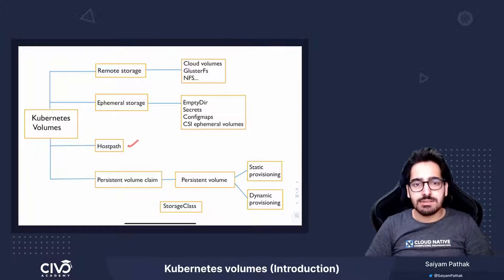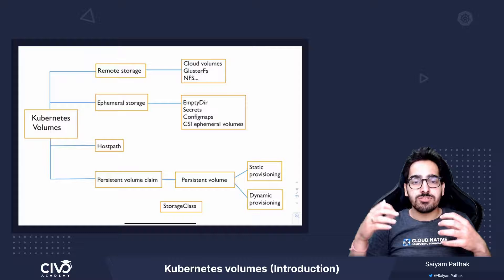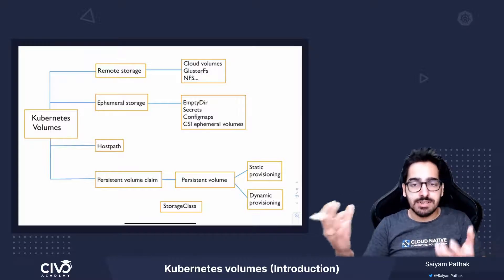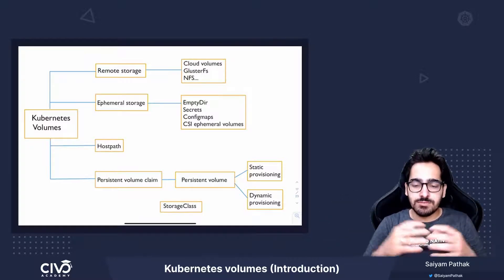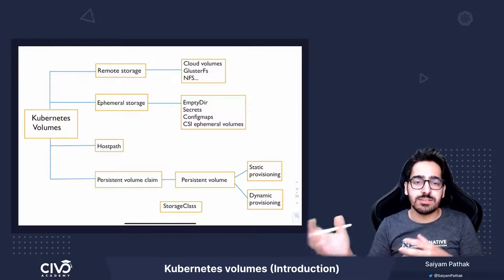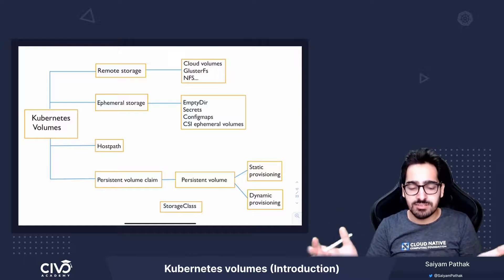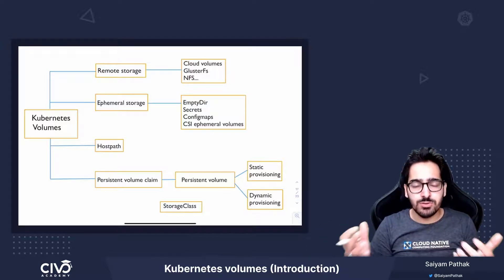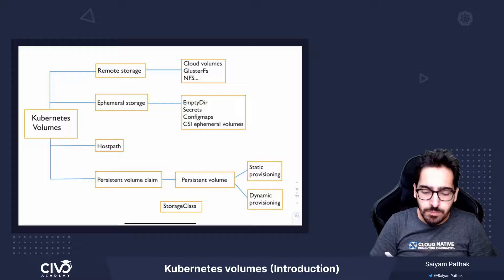Next is the host path that mounts the node's disk inside the container. It is very much restricted inside the cluster. If your pod is pinned up on another node where the host path is not there, there can be inconsistencies, but there are certain use cases for which host path is also used.